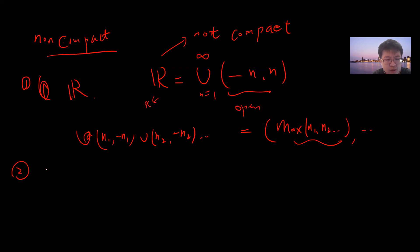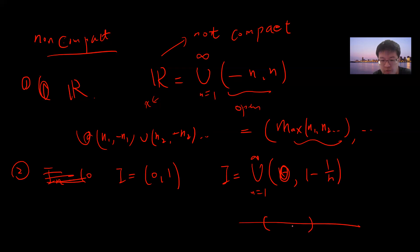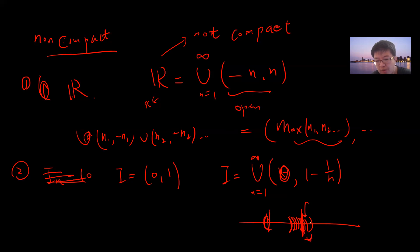Second example: take the open interval (0, 1). This open interval can be covered by intervals like (1/N, 1) for N going to infinity. When N equals 2, the interval is (1/2, 1), and it grows as N increases. But there's no finite subcover because if you only take finitely many parts, you will miss something very close to zero. So (0,1) is non-compact.